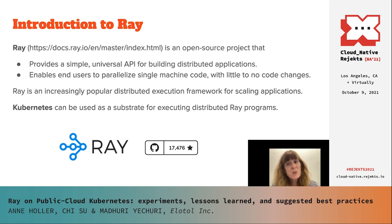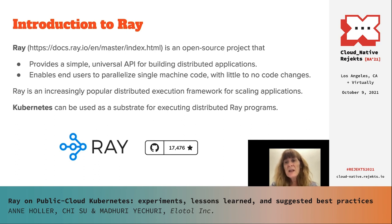So what is Ray? Ray is an open source project that provides a simple, universal API for building distributed applications. Unlike low-level systems like MPI or high-level ones like Spark, Ray allows users to parallelize existing single-machine code by annotating their functions to turn them into tasks, and annotating their classes to turn them into actors, with little or no other code changes. This makes it an increasingly popular way of creating and scaling distributed applications.